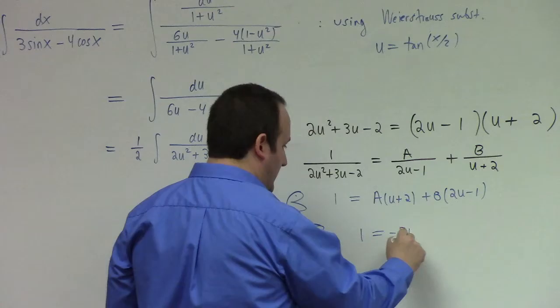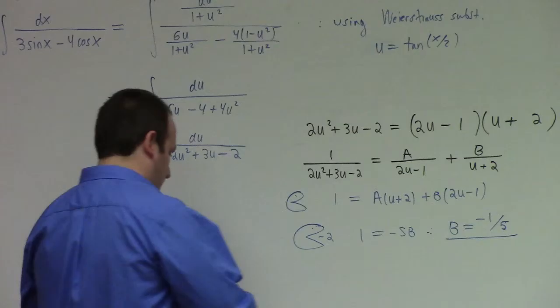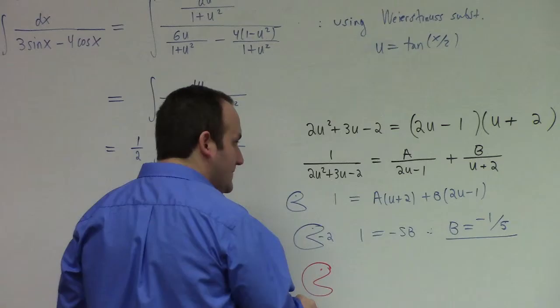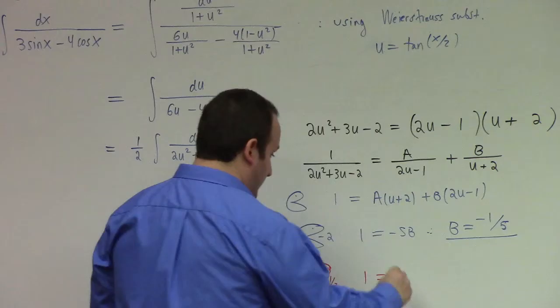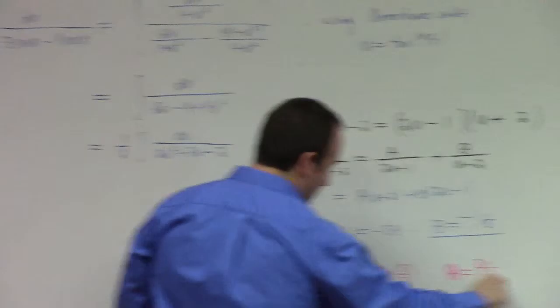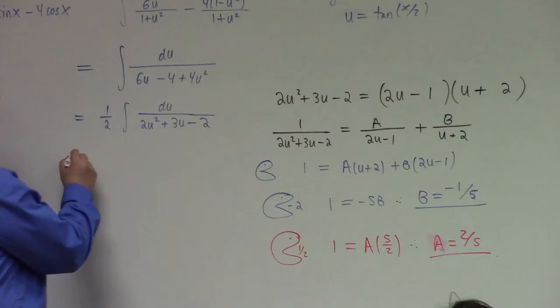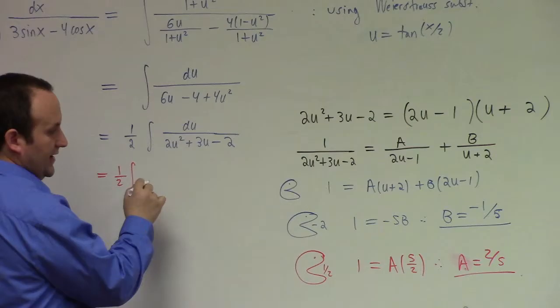I'll call this thing Pac-Man. We'll feed Pac-Man minus 2: that gives us 1 equals minus 5b, so b is minus 1 fifth. Then feed Pac-Man one half: that makes the B term vanish and leaves 1 half plus 2, otherwise known as 5 halves times A, so A equals 2 fifths.